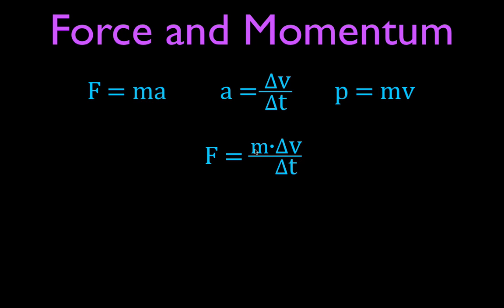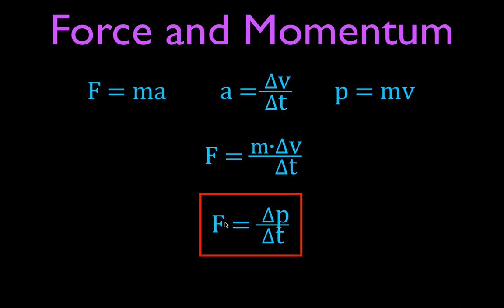You might notice that mass times change in velocity is what we have in the momentum equation — momentum equals mass times velocity. If we want to change the momentum, we can change the velocity. So mass times the change in velocity is actually the change in momentum. This gives us the equation: force equals the change in momentum over the change in time. When we change something's momentum over time, we have to apply a force to do that.